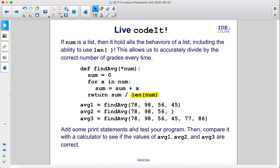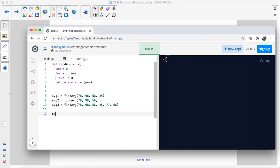Add some print statements and test your program. Then compare it with a calculator to see if the values are correct. So let's add some print statements. We just want to print average one, print average two, print average three. So those look right to me. You can check them with a calculator if you would like. But yeah, we have three averages, different numbers of grades every time.